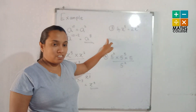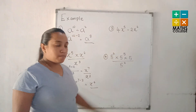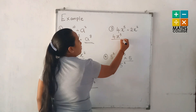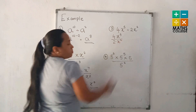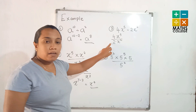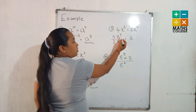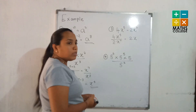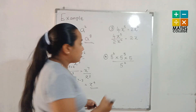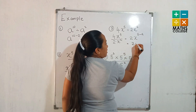The third question has both a number and an algebraic term: 4x to the power 5 divided by 2x to the power 2. First, divide the numbers: 4 divided by 2 equals 2. Then, x to the power 5 divided by x to the power 2 — subtract the indices, 2 from 5. The answer is 2x to the power 3.